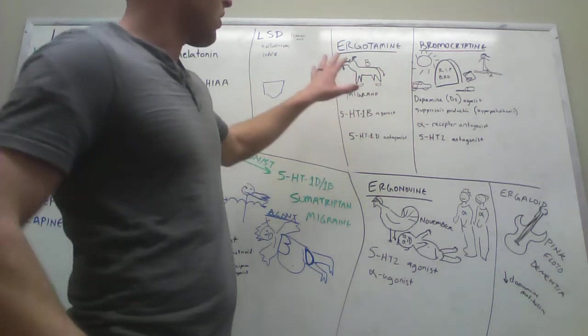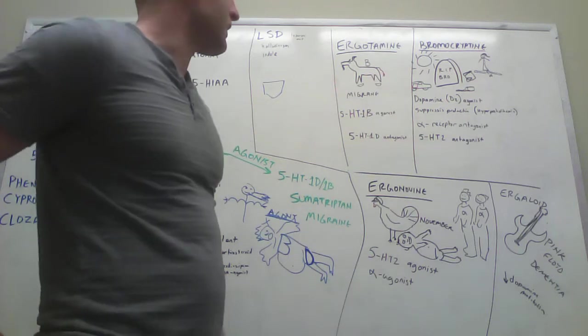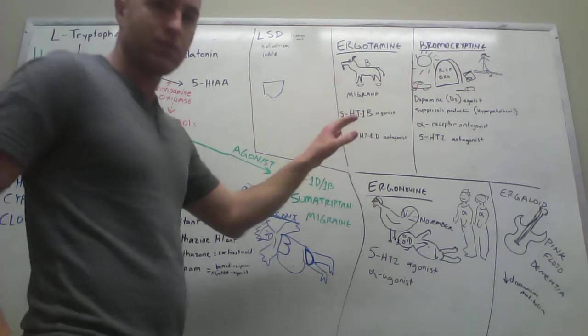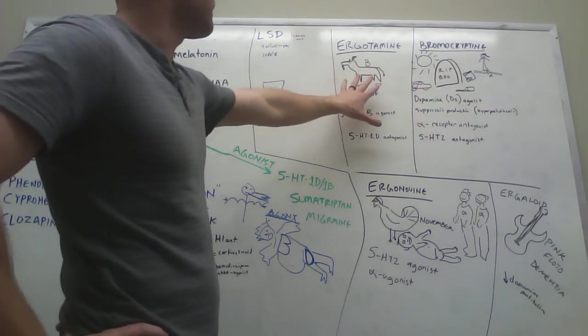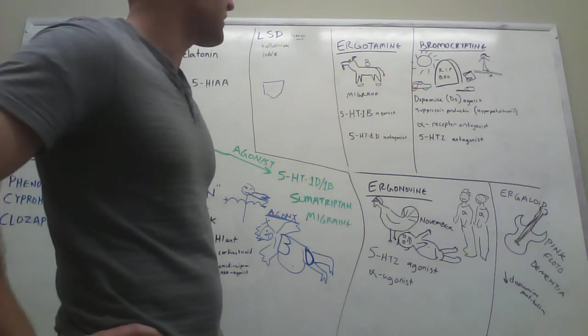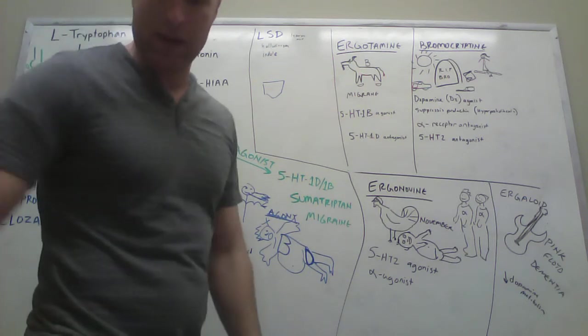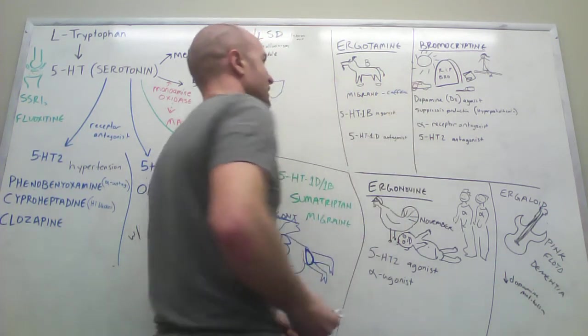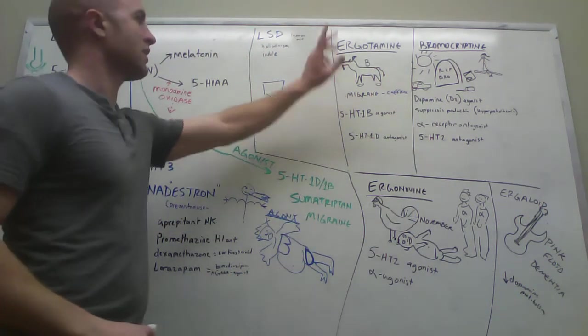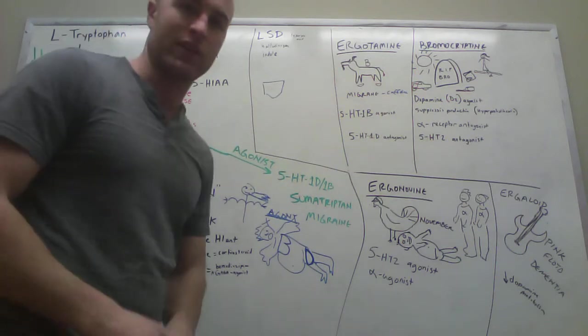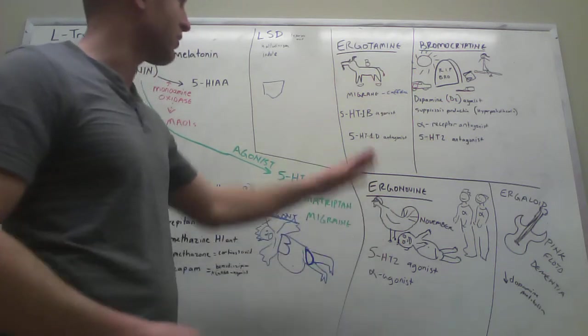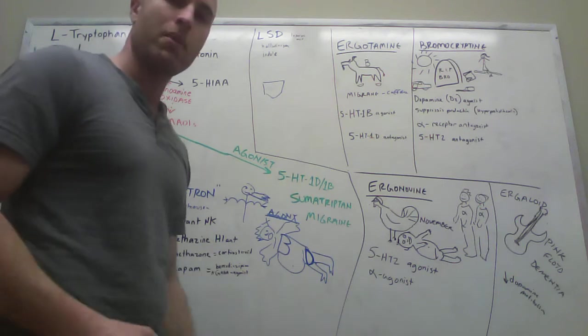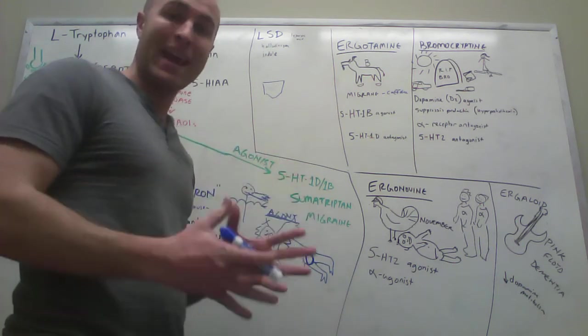Now there are also the ergot alkaloids. We're going to go over these really quickly. Ergotamine is for treating migraines. Apparently they give it with caffeine because it increases its effectiveness. So this goat is mean - your goat is mean. Ergotamine. Why is your goat mean? Because your goat has a migraine.